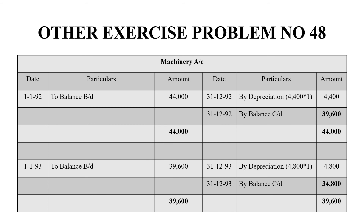In 1993, the balance brought down is Rs. 39,600. Depreciation is 4,800 hours × Re. 1 = Rs. 4,800, giving a balancing figure of Rs. 34,800. The grand total on both sides of the account is Rs. 39,600.